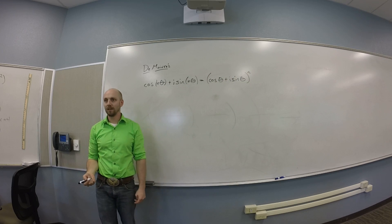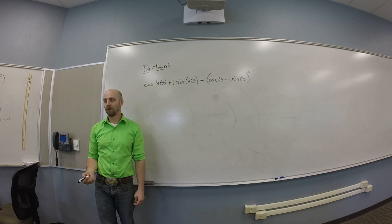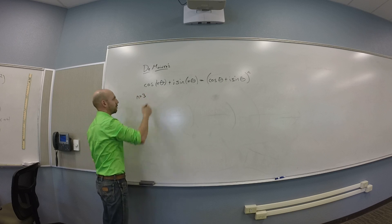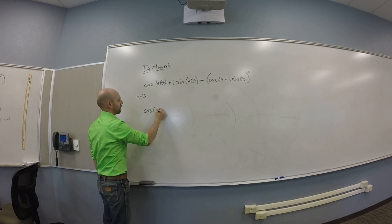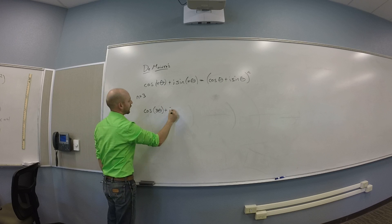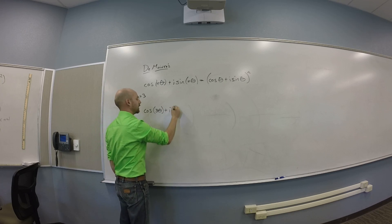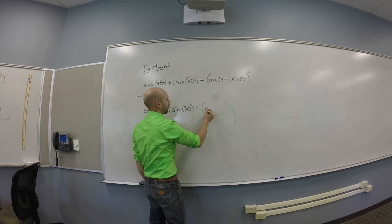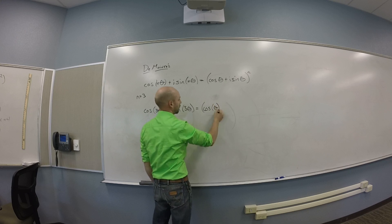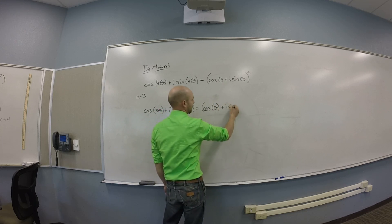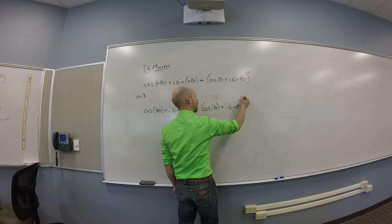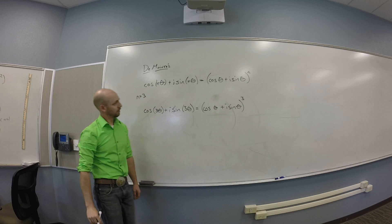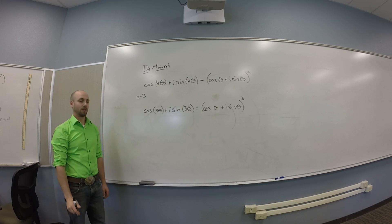So if I want a triple angle identity, what do I need for n? That equals 3. So cram 3 in there. Get cosine of 3 theta plus i sine of 3 theta equals the quantity cosine theta plus i sine theta, all cubed.